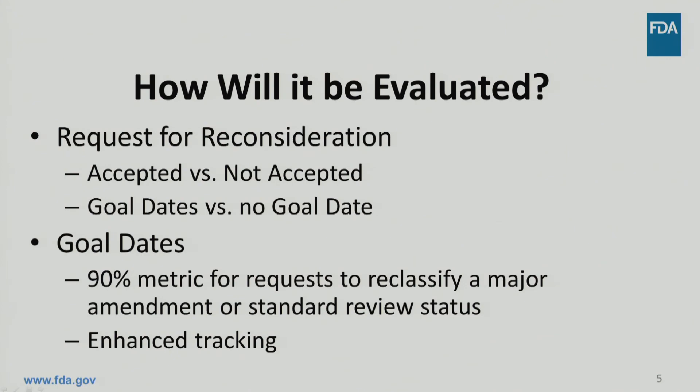Now that we have gone through the process for a request for reconsideration, how will this process be evaluated? FDA will track all applicable requests for reconsideration submitted under the ANDA program. Each request will be assessed to determine whether it is an appropriate matter for reconsideration and whether it satisfies the procedural criteria outlined in the guidance. FDA will also track timelines of all requests for reconsideration, not only ones eligible for GDUFA-2 goal dates, and will review and respond to all requests as expeditiously as possible. FDA will make every effort to meet or exceed the 90% metric for requests pertaining to the reclassification of a major amendment or standard review status.